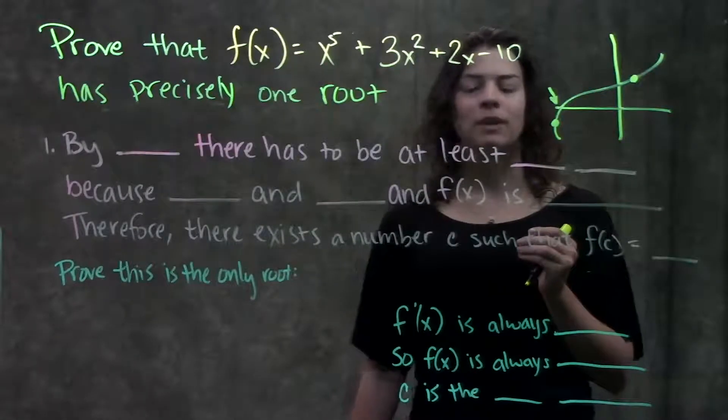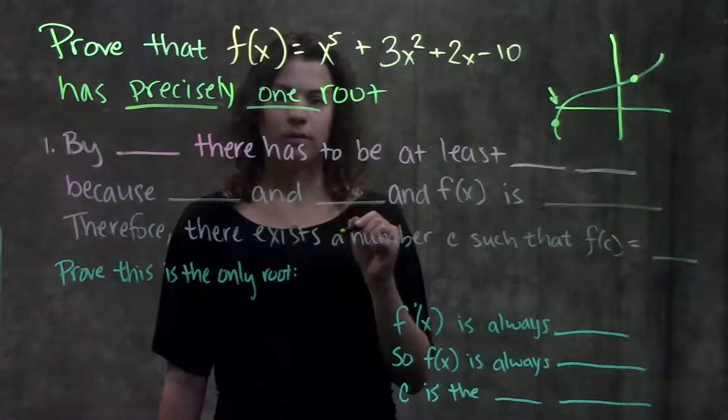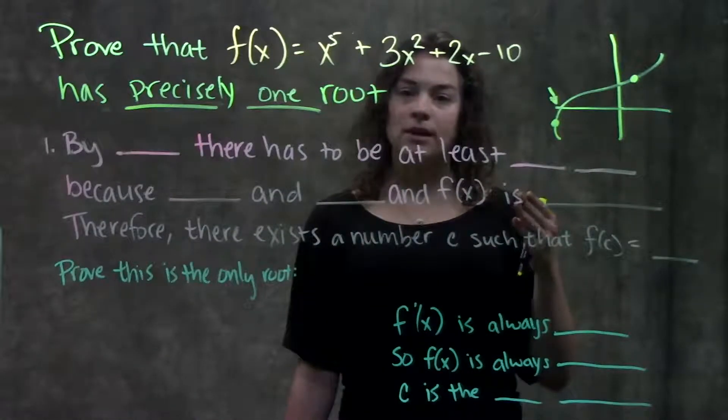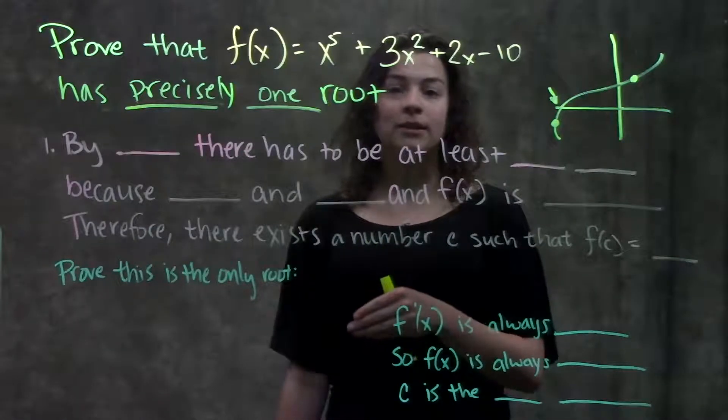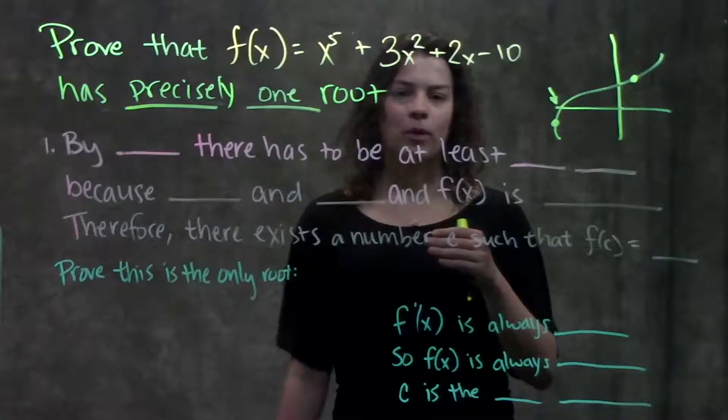This question, though, what makes it different is that it's asking us to prove that it has precisely one root. The way we start this problem is going to be similar—we're going to use intermediate value theorem—but then in step two, what makes it different is that we're going to end up using the derivative.